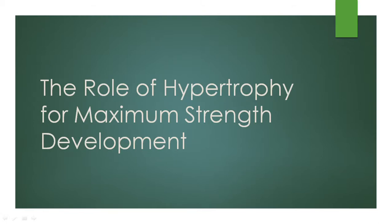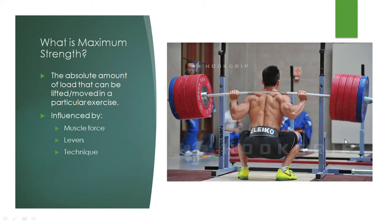Hi everyone, this is Peter here from Movement and Performance. In this video today we're going to be discussing the role of hypertrophy for maximum strength. Maximum strength, in the case that we're talking about, is essentially how much load can be lifted in a certain movement or exercise. So, as shown in this photo, this guy doing a very heavy squat — his absolute strength is how much weight he can lift in the squat.